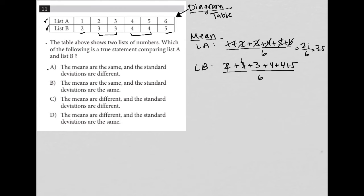And again, 2 plus 3 is 5, plus 3 is 8, plus 4 is 12, plus 4 is 16, plus 5. It's the same thing, 21 over 6. So our means are, in fact, the same. So that's a check. The means are the same.